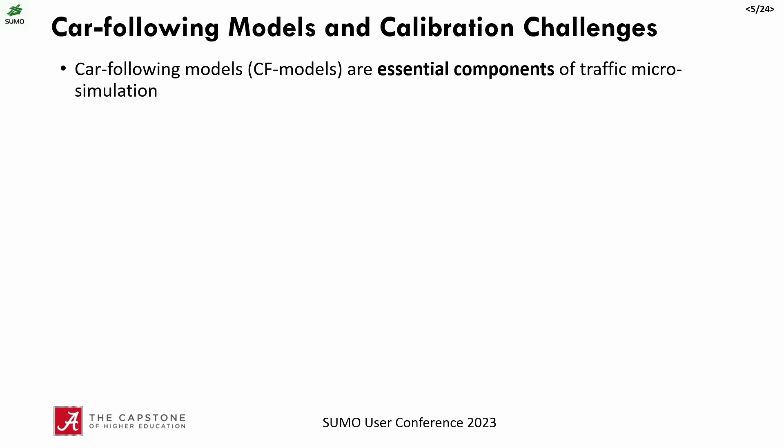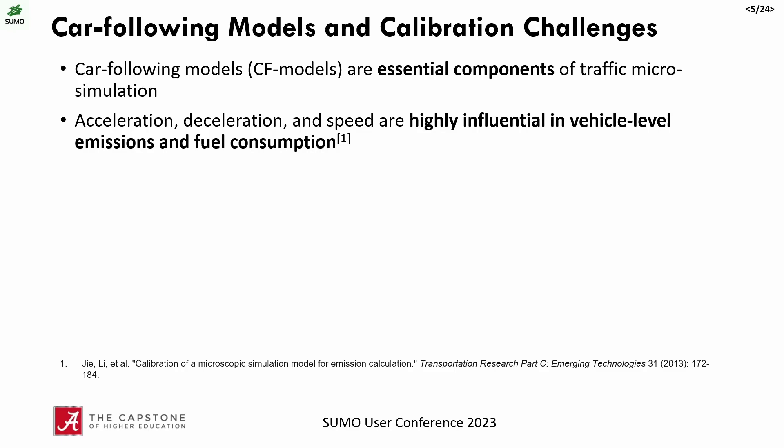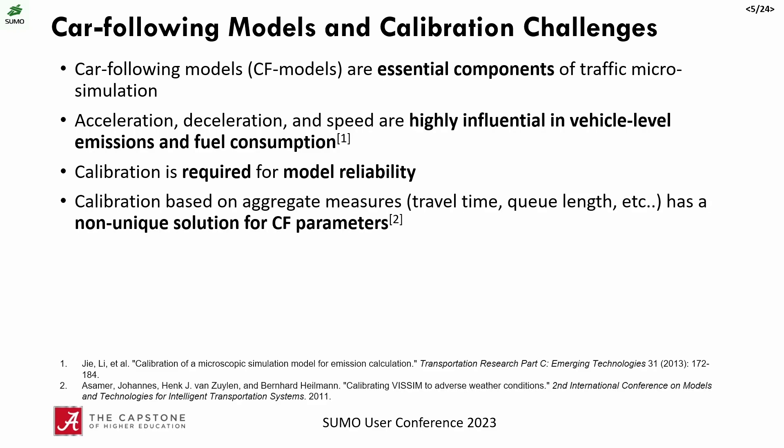Why are car-following models important? They're one of the essential components of traffic micro-simulation and describe how the vehicle agent moves in the simulation. From an emissions or fuel consumption estimation point of view, acceleration, deceleration, and speed are highly influential in vehicle-level emissions and fuel consumption. We know from literature that calibration is required for model reliability, but typical traffic simulation calibration based on aggregate measures like travel time, queue length, or volume has a non-unique solution for car-following model parameters.